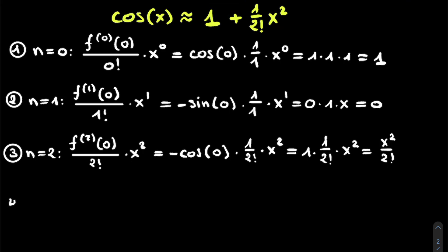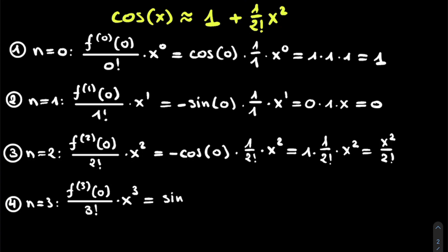So we see that if x deviates a small amount from 0, the cosine of x will deviate also a small amount from 1, and this deviation is given by 1 over 2 factorial times x squared. Let's now look at the last term that we will explicitly calculate, just so the pattern will be clear. So we have f³ of 0, so the third derivative of the cosine of x filled in at x is equal to 0, divided by 3 factorial, multiplied by x to the power of 3. Now this will be equal to the sine of x filled in at x is equal to 0, so the sine of 0, multiplied by 1 over 3 factorial, multiplied by x to the power of 3. This again will be 0, since the sine of 0 is always 0, multiplied by 1 over 3 factorial multiplied by x to the power of 3, which is of course 0.